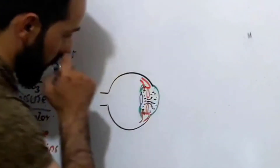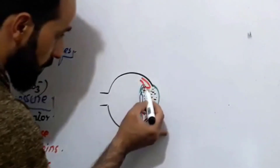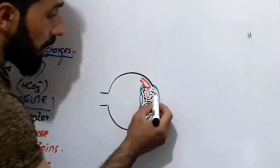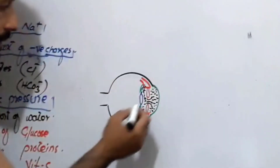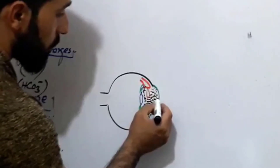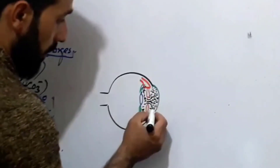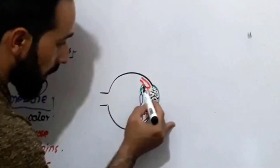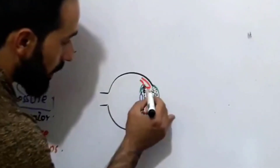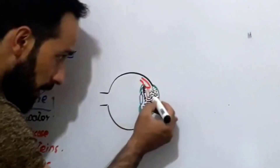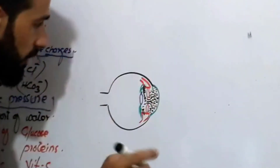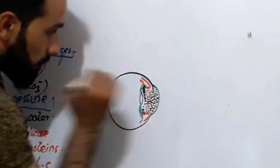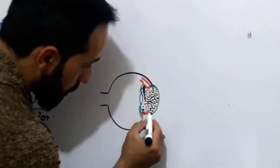When there is constant production of the aqueous humor, there must be drainage — otherwise there will be an increase in intraocular pressure of the eye, and that is called glaucoma, which causes a series of complications. So if there is supply or production, there is also drainage. The aqueous humor is produced in the posterior chamber and drained from the anterior chamber. This is a very important point — it is produced in the posterior chamber and drained from the anterior chamber.